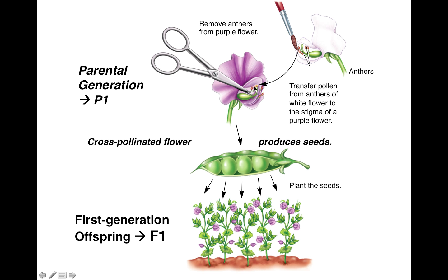You can either have self-fertilization, where the pollen from the same flower fertilizes its own eggs, or you can cross-fertilize. If you're going to do that, you have to remove the anthers and get some pollen from a different plant. In either case, you'll produce seeds which, if you plant them, will grow into pea plants.